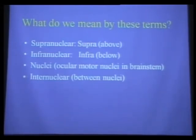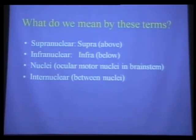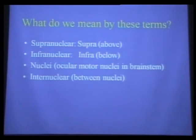The two nuclei talk to each other, and that connection is what we call internuclear. That's the oversimplified way most ophthalmologists think about the basics. Neurologists don't learn about the supranuclear and infranuclear pathways the same way ophthalmologists do—we look at it from a morphological standpoint: what do we see in the clinic, can we make it match the anatomy, and are we going to order a scan? So my apologies if it's a bit more simplistic.